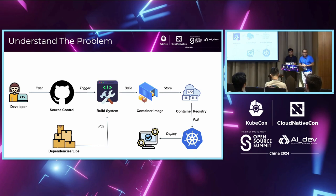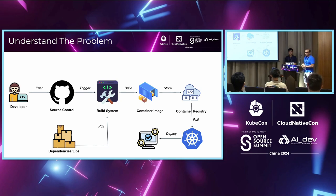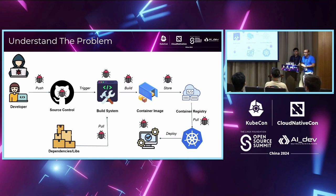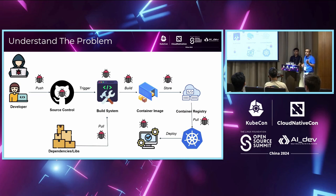Most of us have been contributing to software — open source or otherwise — and have done one of these things before: you write your code, push it to source control, it gets built with a build system, assuming you're using application containers, deploy it to a container registry, and then the applications are running. Everything looks great, unless there's someone looking to do harm. For bad actors, there are plenty of things they can exploit. We call this in cybersecurity the attack vector — where can I enter the system? It could be a data breach, malware, ransomware — you name it.